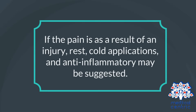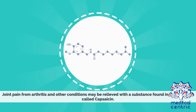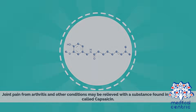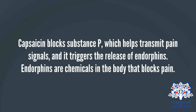If the pain is as a result of an injury, rest, cold applications, and anti-inflammatories may be suggested. Joint pain from arthritis and other conditions may be relieved with a substance found in chili peppers called capsaicin. Capsaicin blocks substance P, which helps transmit pain signals, and it triggers the release of endorphins — chemicals in the body that block pain.